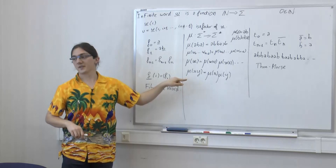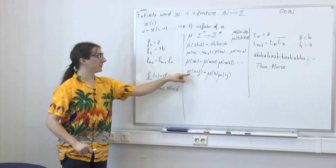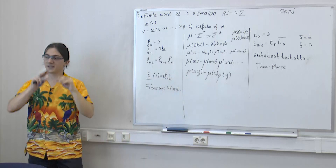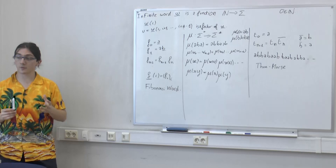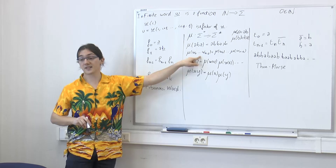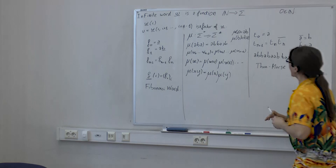The functions satisfying this equation are exactly the ones built by taking images of letters and concatenating — it's an if and only if. This tool is very, very useful for talking about infinite words. For instance, we can express recurrence relations like the Thue-Morse or Fibonacci recurrences using morphisms, which makes things much easier to work with.